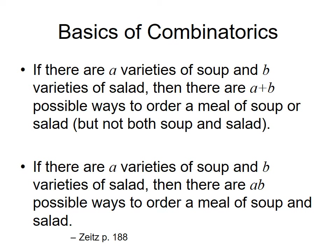Some basic combinatorics: soup or salad — if you want soup or salad but not both because you're having lunch, and there are A soups and B salads, you add them together. If you want soup and salad — both, because you're having dinner — then you multiply. So OR means add and AND means multiply. That's the key point of soup and salad.